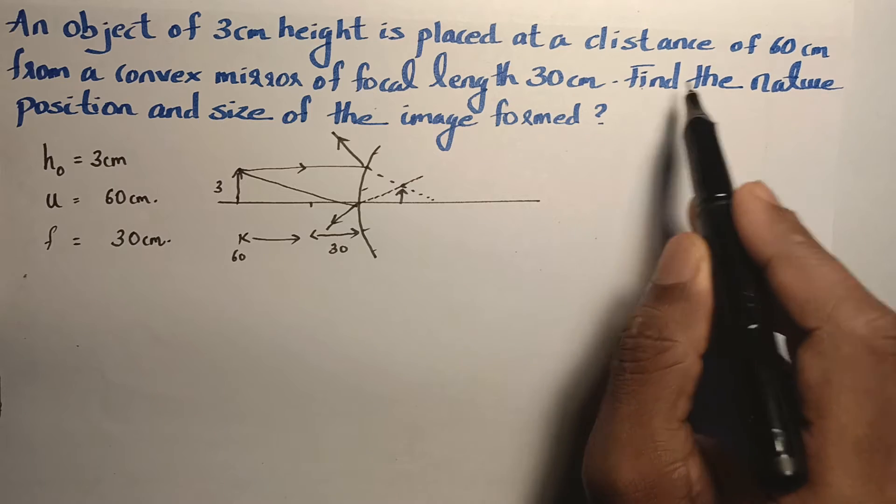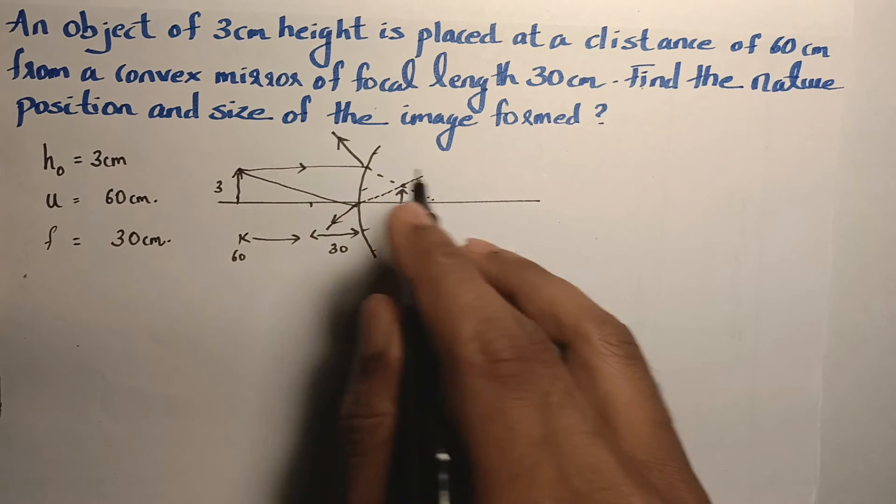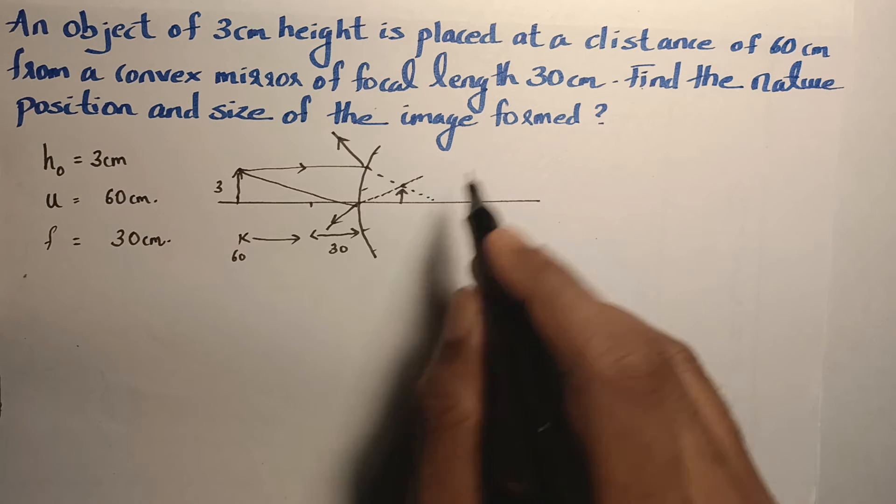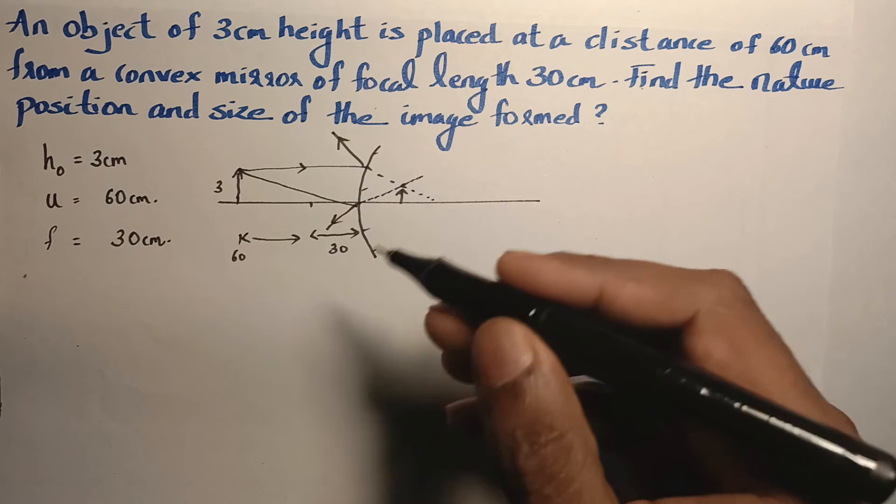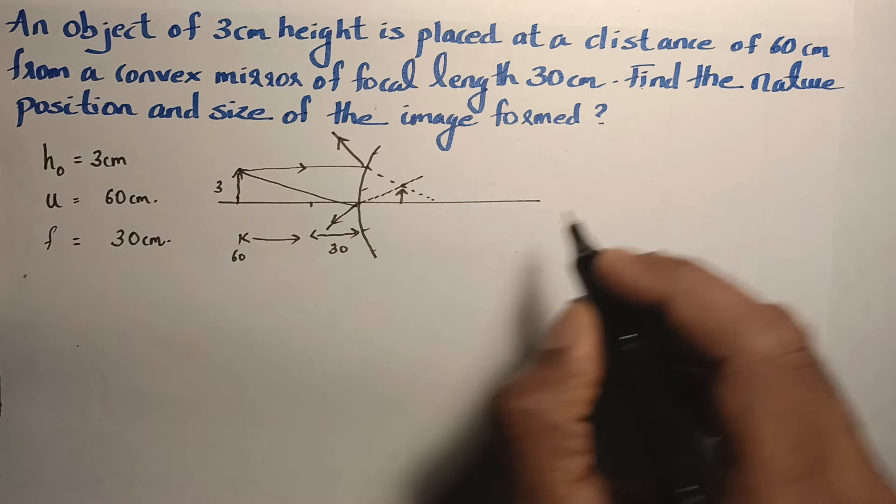They have asked to find out the nature position and size of the image. We got a rough idea about the question and using ray diagram to get a rough idea will be better in answering the question or for making less errors. Now we will discuss its theory.